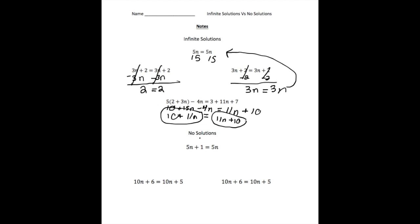The second type is when there's no solution — the opposite of infinite. Here we have 5n plus 1 equals 5n. Let's say n is 2: 5 times 2 is 10, plus 1 is 11, and on the other side, 5 times 2 is 10. No matter what n is, this side of the equation is going to be one more than this one. Even if n was a million, 5 million plus 1 does not equal 5 million. So that's an example of no solution.